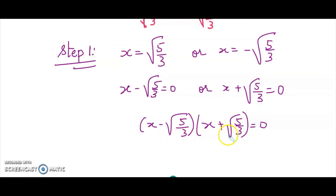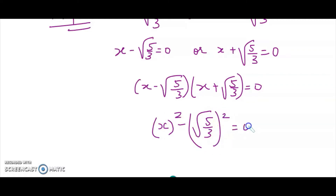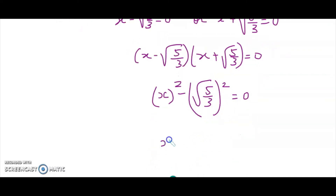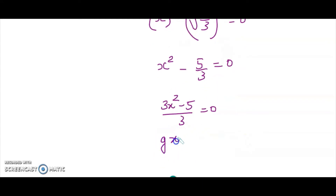Clearly it is a minus b times a plus b, so we apply the algebraic identity a squared minus b squared. It becomes x squared minus root 5 over 3 whole squared, and the square root and square cancel out, giving x squared minus 5 over 3 equals 0. Taking the LCM, it becomes 3x squared minus 5 over 3 equals 0. Thus our divisor g(x) becomes 3x squared minus 5, which we rewrite as 3x squared plus 0x minus 5 since the x term is missing.